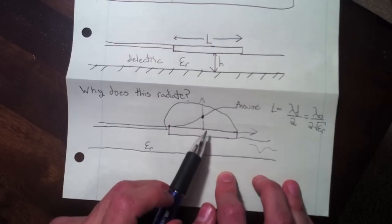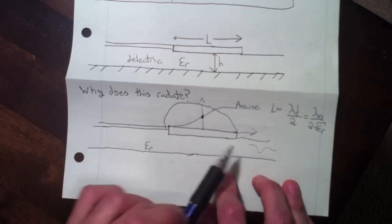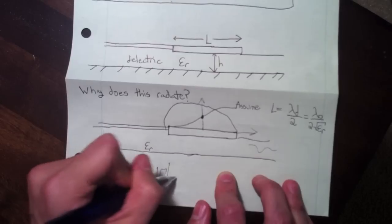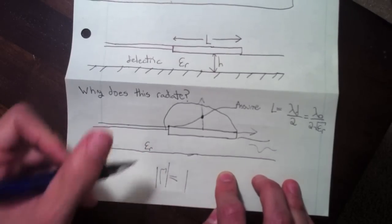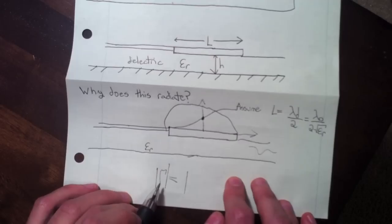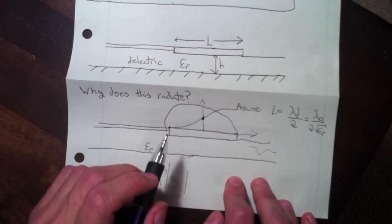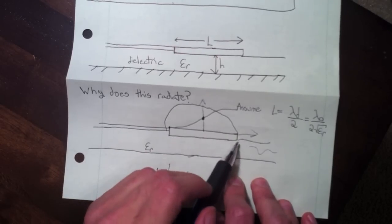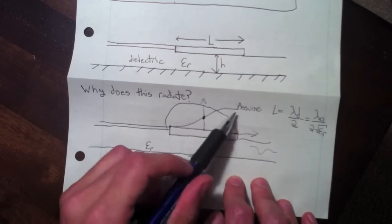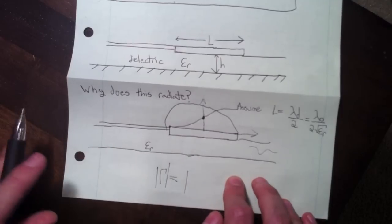You can think of the patch as an open circuited transmission line. In that case the reflection coefficient gamma is equal to one in magnitude. Whenever you have the magnitude of the reflection coefficient equal to one, your current and voltage are going to be 90 degrees out of phase. The open circuit forces the voltage and the current to come out of phase.